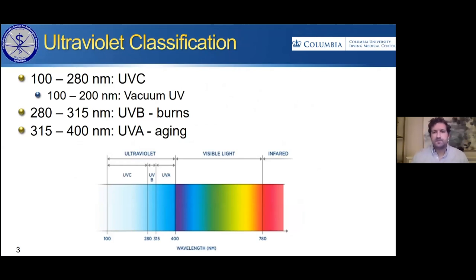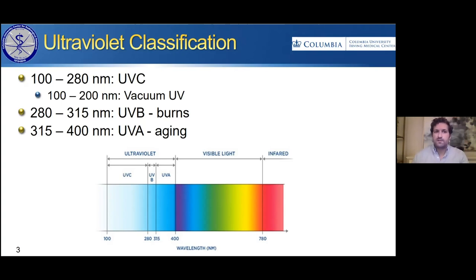Diving deeper into ultraviolet radiation, it's divided into a few different regions depending on the wavelength. Starting with the highest energy and lowest wavelength, from 100 to 280 nanometers, is what we call UVC. A subset of UVC called vacuum UV spans 100 to 200 nanometers — it's called vacuum UV because oxygen and nitrogen in the air are very absorbing at these wavelengths. Progressing to longer wavelengths, 280 to 315 is UVB, and 315 to 400 is UVA. UVB is associated with burns — B for burns — and UVA is associated with aging effects.